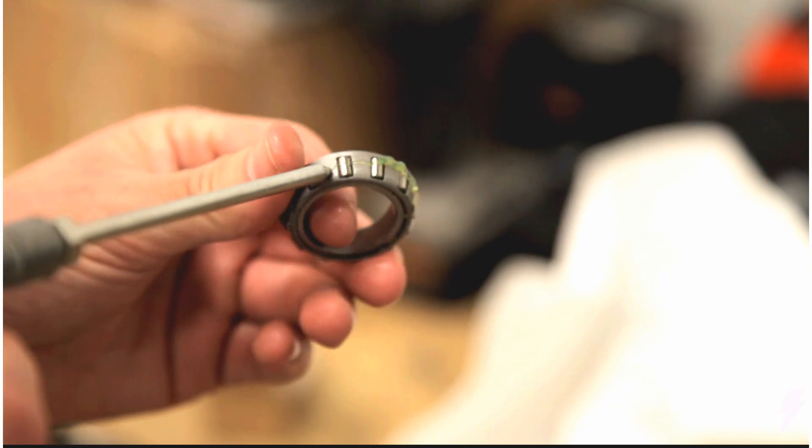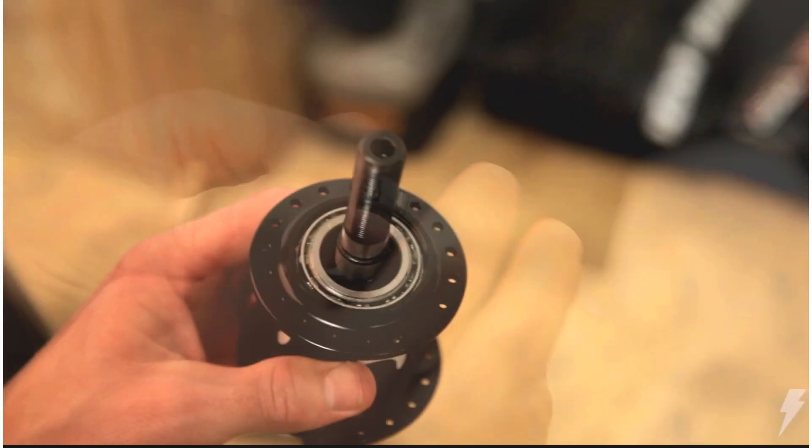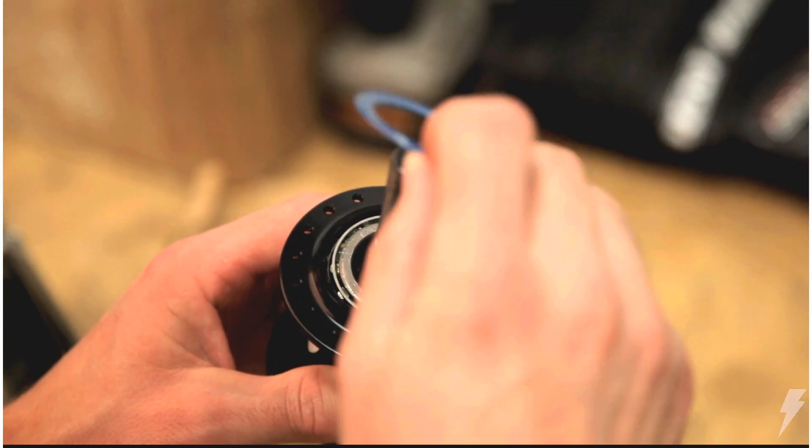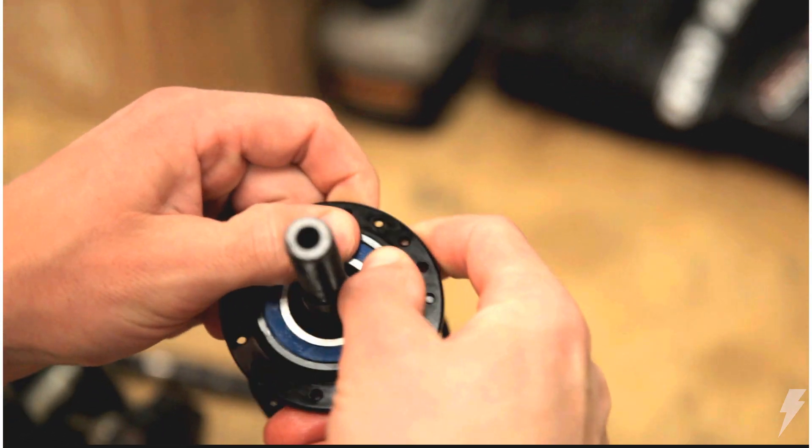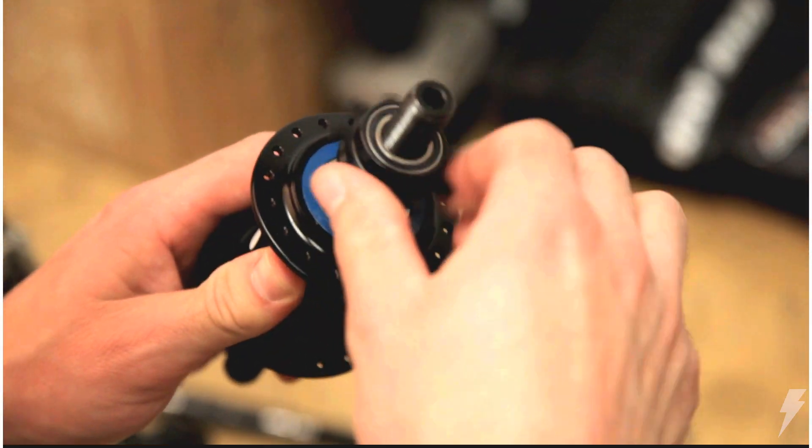Now apply grease to the top of the rollers. Insert bearing back into the hub shell and reinstall the rubber seal, making sure it pops back into place. Now reinstall driver just as before.